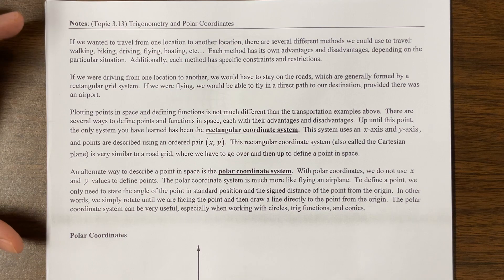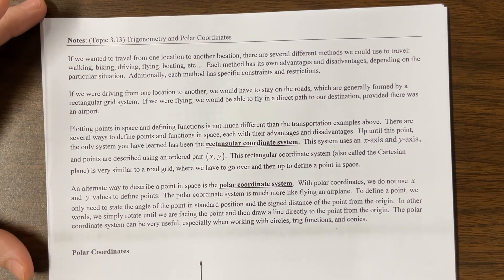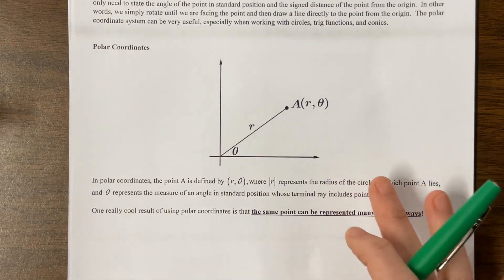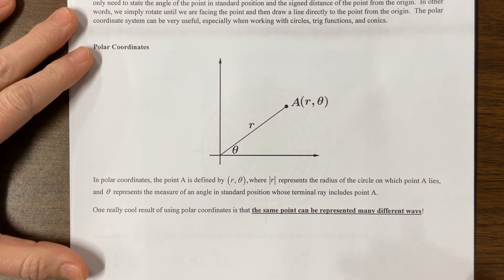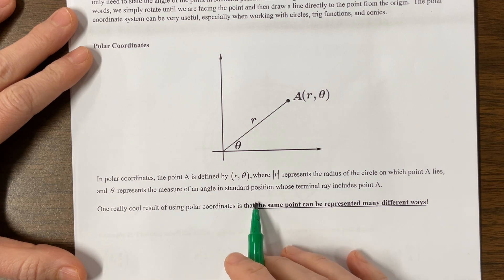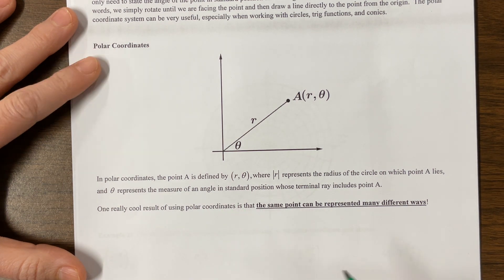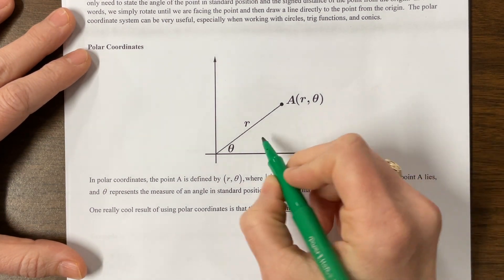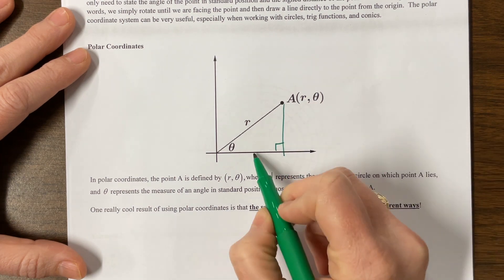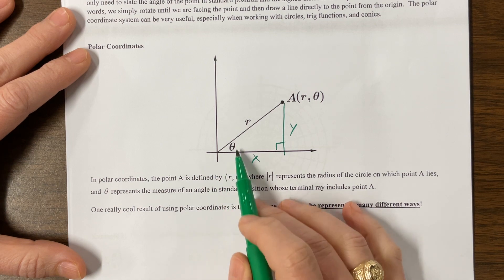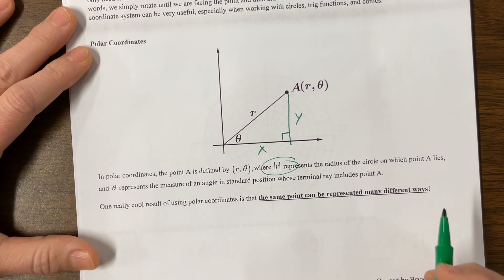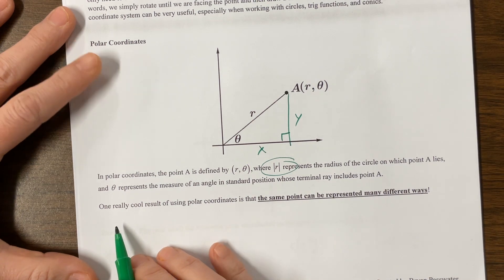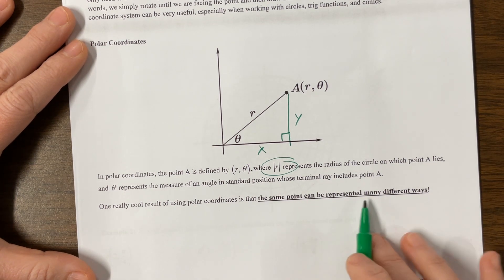He gives a nice little introduction here — if you want to hit pause and read through it, you're welcome to do so. Let me jump in and start working some problems. In polar coordinates, a point — say we name this one A — is defined as (R, theta), where the absolute value of R represents the radius of the circle, and theta represents the measure of the angle in standard position whose terminal ray includes point A. So basically, we have our x-coordinate and y-coordinate, and we can find what angle is formed and what the radius is. I like how he made the distinction that this is the absolute value of R. One of the really cool points of using polar coordinates is that the same point can be represented many different ways.